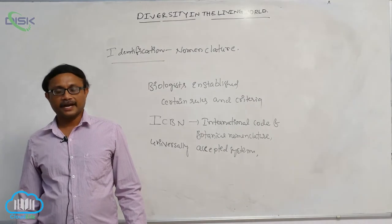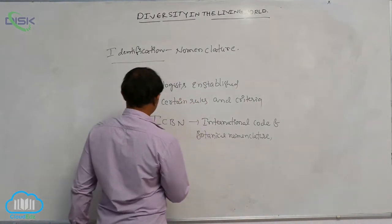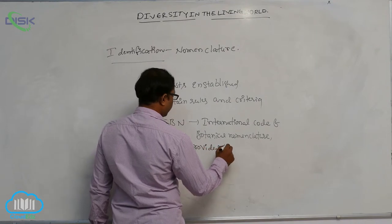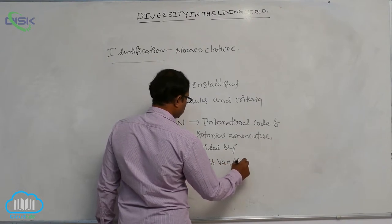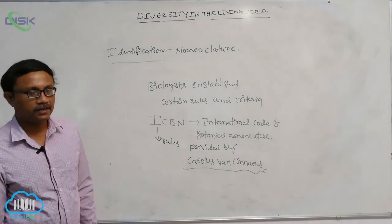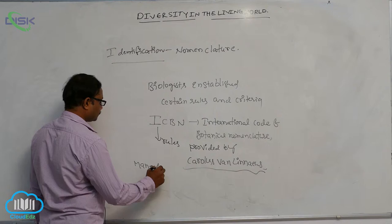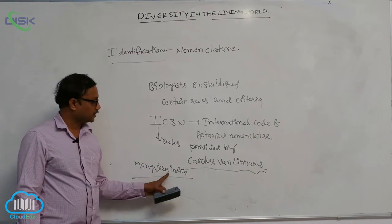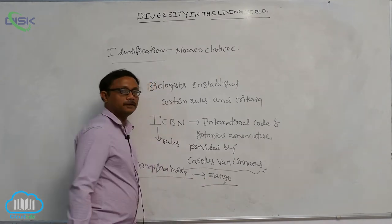For the first time, ICBN rules were provided by the scientist Carolus von Linnaeus. Remaining biologists followed his criteria and rules of ICBN. For example, the biological name Mangifera indica — in this name, the first word indicates the genus and the second word indicates the species. It is the biological name of mango.